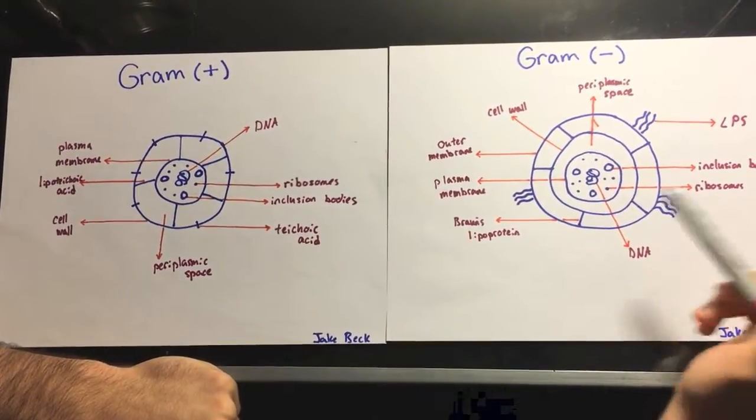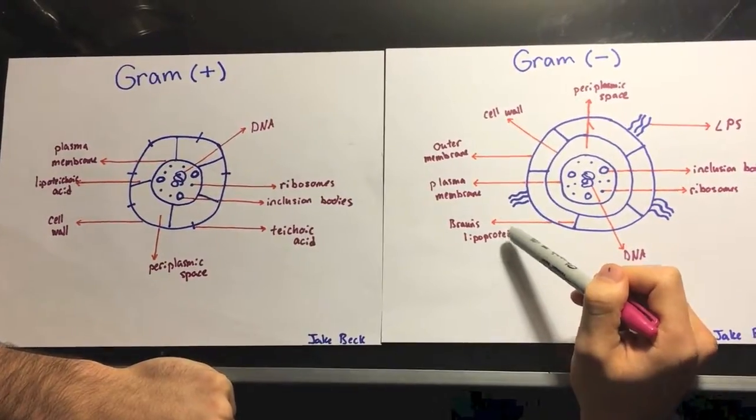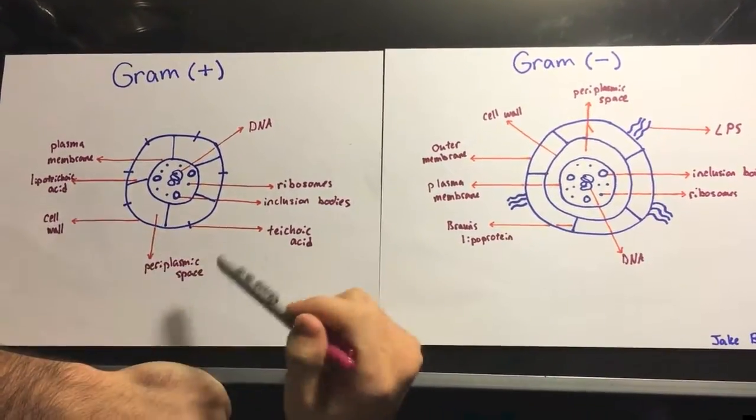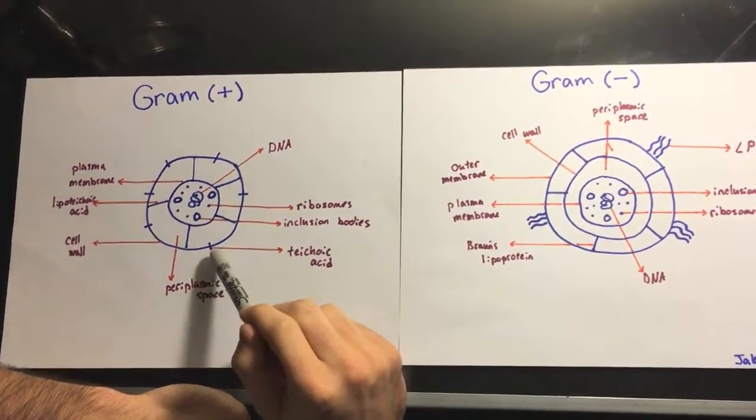The gram-negative has the Braun's lipoprotein, while the gram-positive has lipoteichoic acid and teichoic acid on the outside.